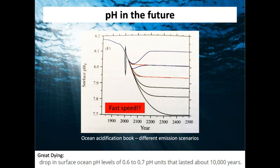A drop of 0.4 to 0.5 pH units may not sound dramatic, but remember that a historical change of 0.6 units happened over 10,000 years. We're potentially seeing that kind of change within 500 years. It's not just that pH has been lower in the past — it's the rate at which pH is getting lower now that matters.